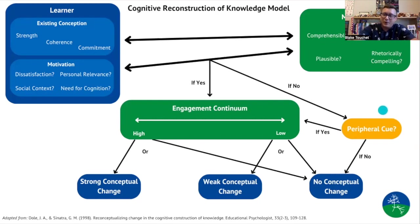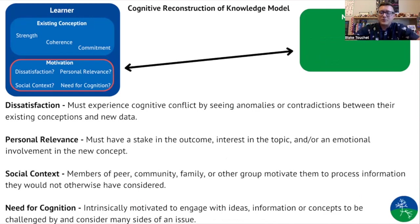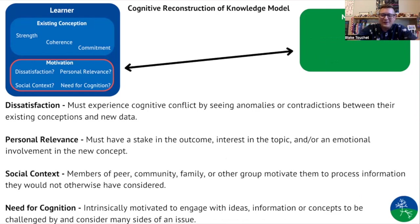The next parts of this knowledge model are going to look at the interactions between the teacher, the students, and the curriculum. The next piece is motivation. There's plenty of research showing that in order for anyone to resolve a misconception, they have to be motivated to do so — motivated to move to a more solid understanding of how a scientific concept actually works. There are four characteristics associated with motivation for changing.